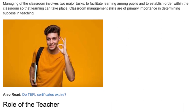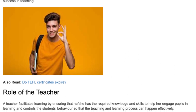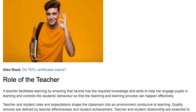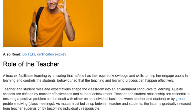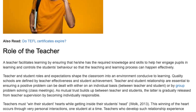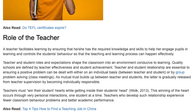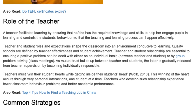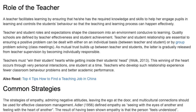Quality schools are defined by teacher effectiveness and student achievement. Teacher and student relationships are essential to ensuring a positive outcome. Problems can be dealt with either on an individual basis between teacher and student, or by group problem-solving through class meetings. As mutual trust builds up between teacher and students, the latter is gradually released from teacher supervision by becoming individually responsible. Teachers must win their students' hearts while getting inside their students' heads (WIC, 2013). This winning of the heart occurs through very personal interactions, one student at a time.